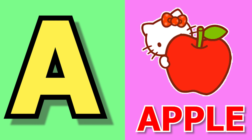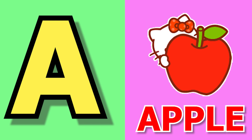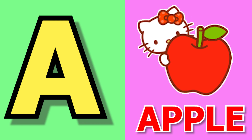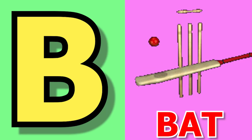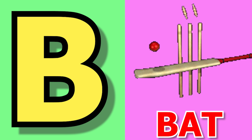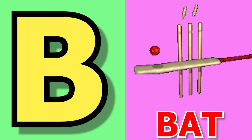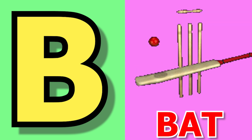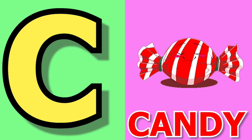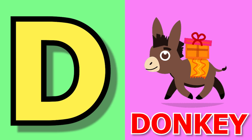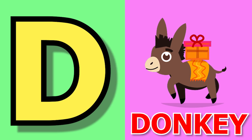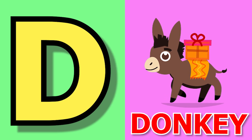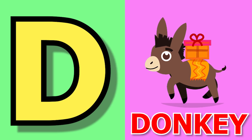A for apple, apple means save. B for bat, bat means balla. C for candy, candy means candy. D for donkey, donkey means gadha.